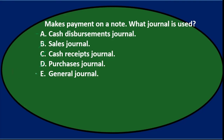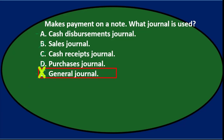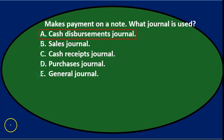Cash disbursements journal or the general journal? Because we paid cash out, I think it can go into the cash disbursements journal, and therefore we don't need the general journal, which is the default when using these special journals. So the answer is A — cash disbursements journal.